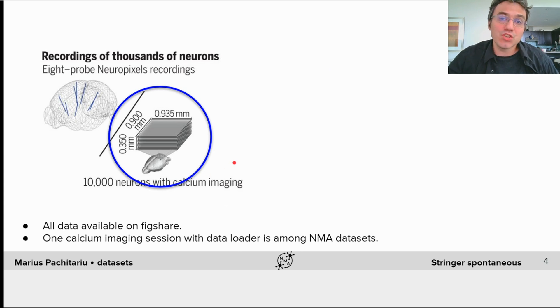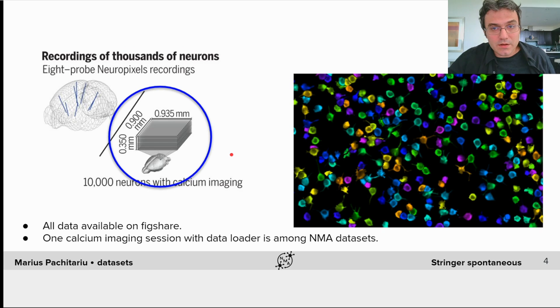The videos I showed on the previous slide have been automatically processed to extract the time courses of activity in the cells that we recorded. Here are some example regions of interest that have been automatically detected by a framework called Suite2P to give you a sense of what the neurons look like. The recording has about 10,000 of these.